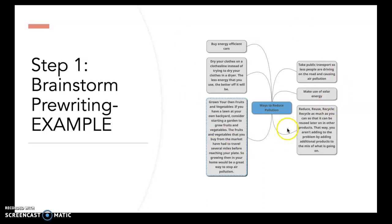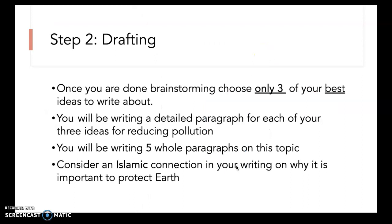Using solar energy and implementing reducing, reusing, and recycling in your daily practice are also great ideas. These are just some ways that you can reduce pollution — there are many other ideas beyond this. Moving on to step two, the drafting stage: once you're done brainstorming, choose only three of your best ideas to write about, because you will be writing a detailed paragraph for each of your three ideas for reducing pollution.